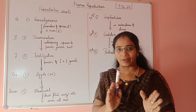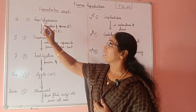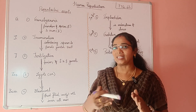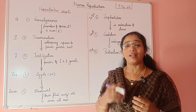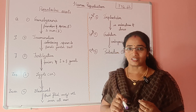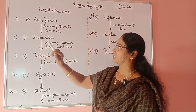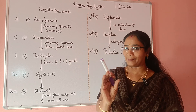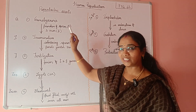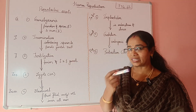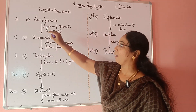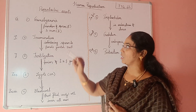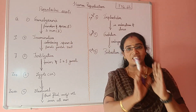The first step is gametogenesis. What do you mean by gametogenesis? Genesis means formation — not synthesis. The formation of gametes is known as gametogenesis. Now, in the case of the male, the male gamete is sperm. The female gamete is ovum. So gametogenesis is the formation of gametes.